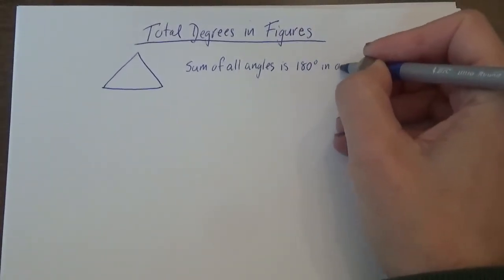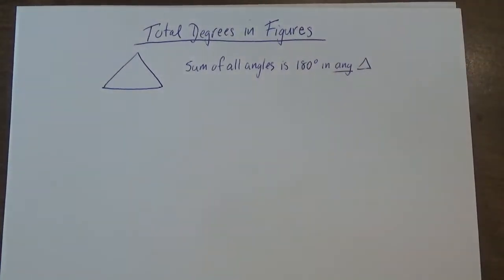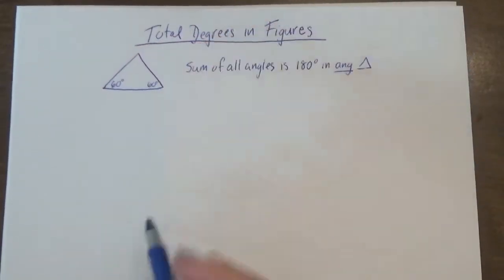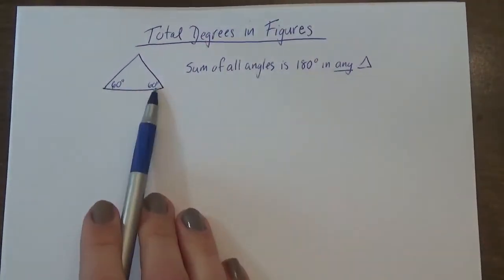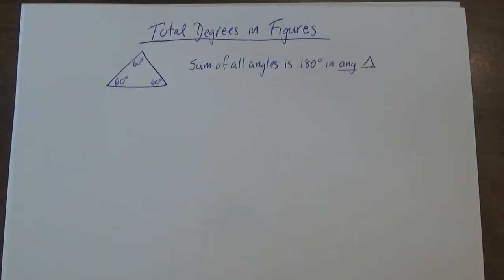I'm going to say in any triangle. Okay, always always true. So if this was 60 degrees and this was 60 degrees, what are we up to? That's 120. It would be 60 more degrees to get up to 180. All right, it's that easy.